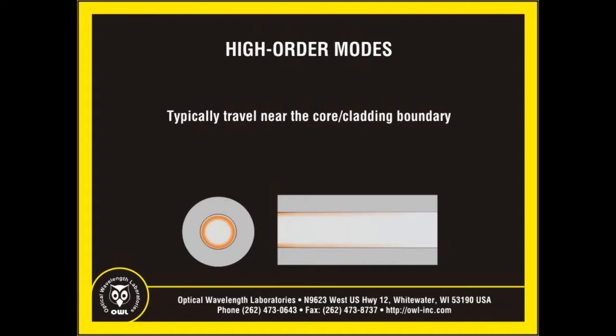High-order modes, on the other hand, tend to occur near the core-to-cladding boundary. Because of this, light traveling in high-order modes naturally disappears into the cladding well before reaching the end of a fiber optic link. Eventually, all of the light traveling in high-order modes will be lost. When this happens, the fiber has achieved what is called equilibrium mode distribution, or EMD.